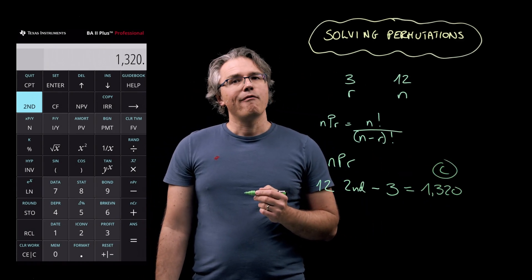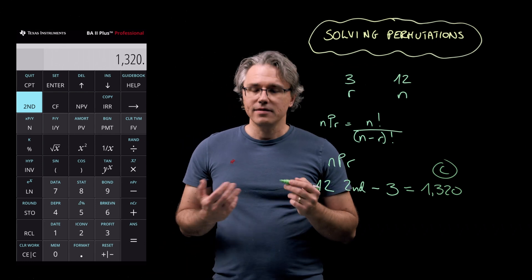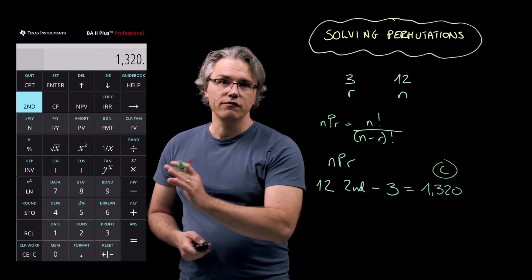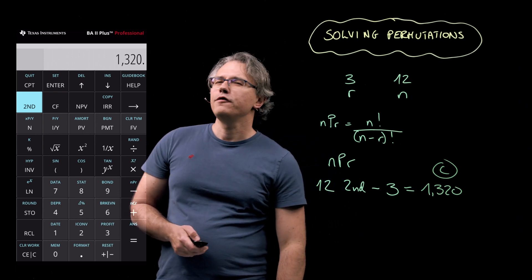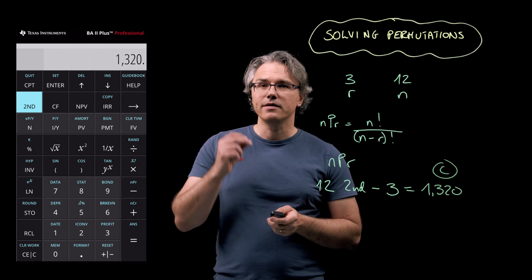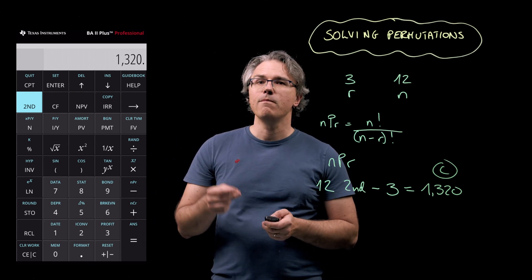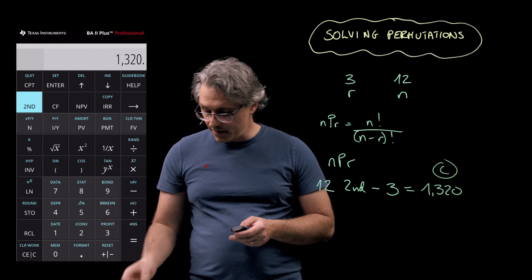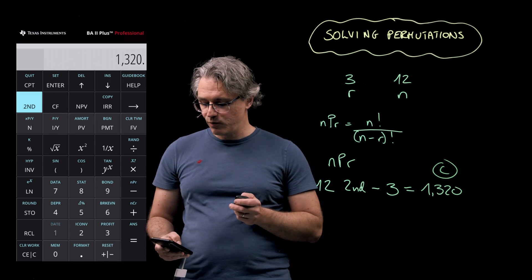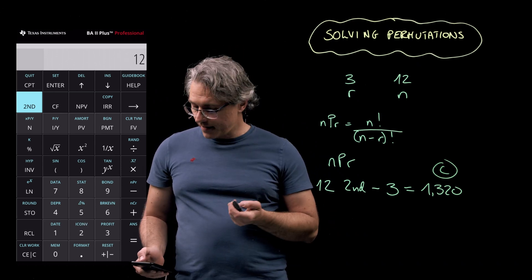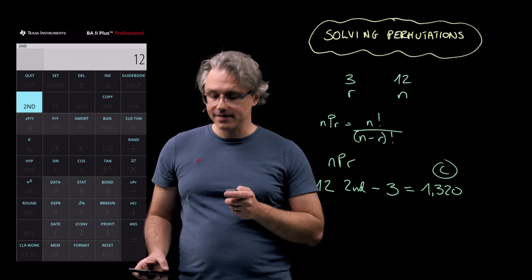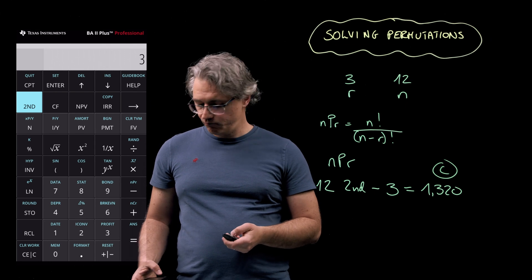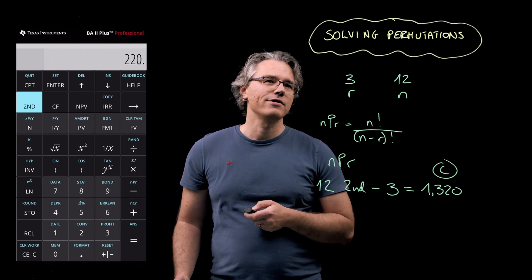What many candidates get wrong in the exam is the decision whether to apply the permutation or combination formula to a particular scenario. If you're not sure, repeat the same steps, but this time using the combination function, which is the secondary function of the plus key. So just like before, 12 followed by second, now plus instead of minus, and 3. And obviously equals as well. And we see 220.